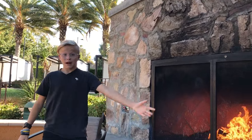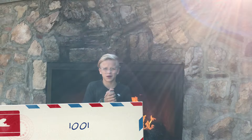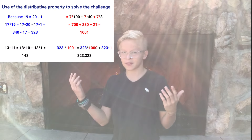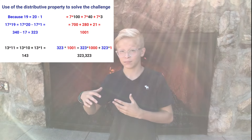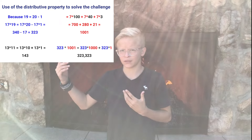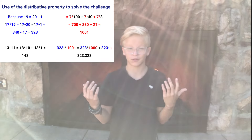Now let's bring back the 323 and the 1001 and just multiply them. 323 times 1 is relatively simple. 323 times 1000 is 323,000, plus 323, which gives us 323,323.